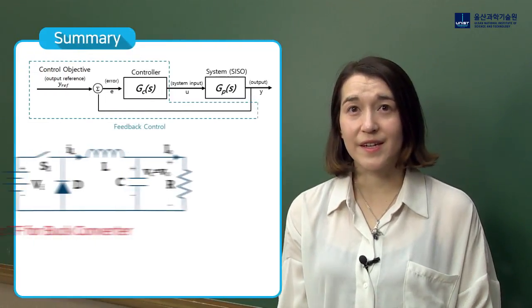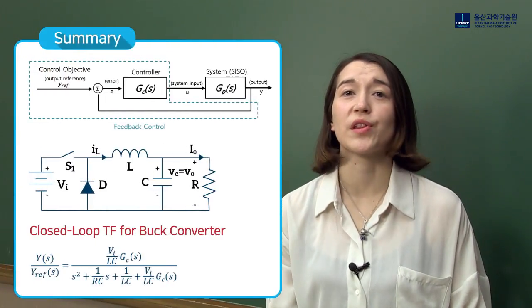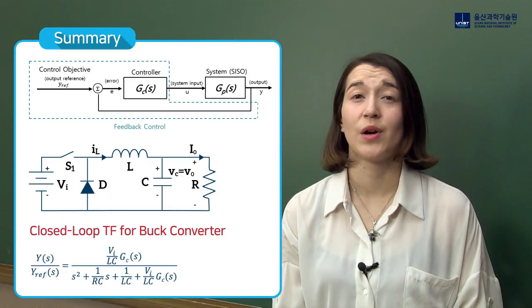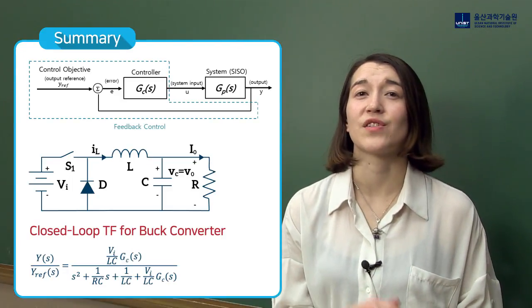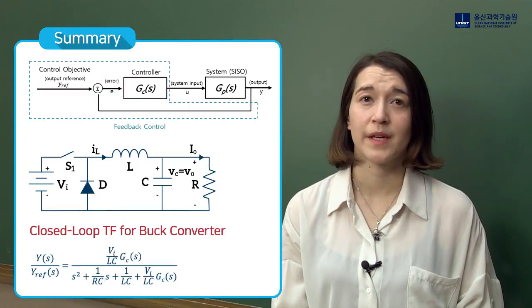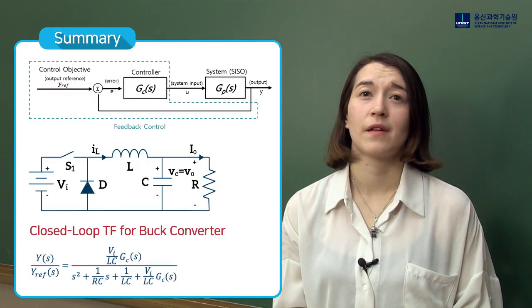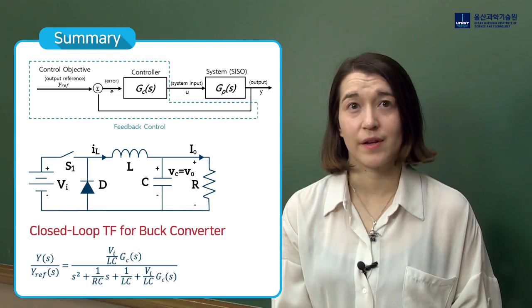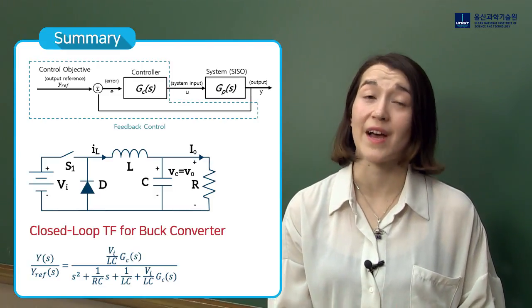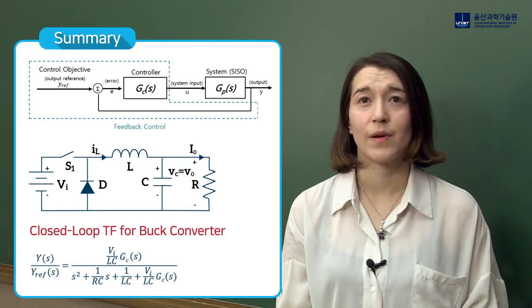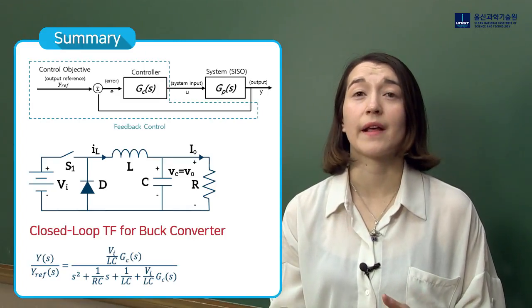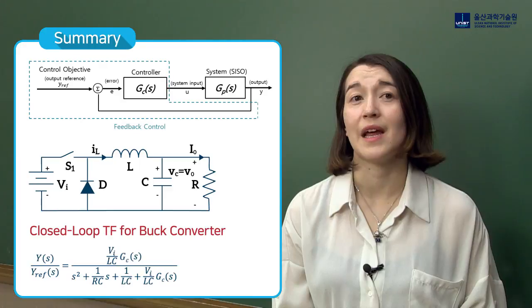From the derivation, we now have the closed loop transfer function for the buck converter, where our control objective is to control the output voltage. However, our controller still needs to be chosen. Once we pick our controller, its transfer function should replace Gc of S. The next step will be to pick a controller and examine the closed loop stability and dynamics.